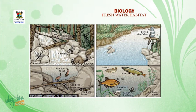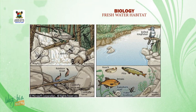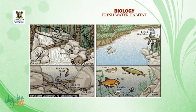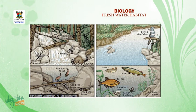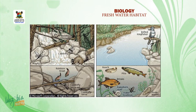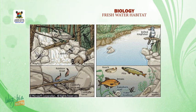Now, students, I would like you to mention those organisms found at the various zones of the freshwater habitat. We mentioned four major zones — the edge of the water, the water surface, the body of the water, and the bottom of the water. Classify organisms based on those zones. We shall continue after break. Thank you.